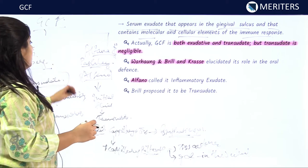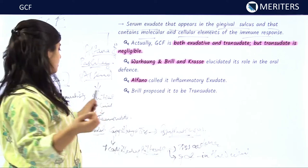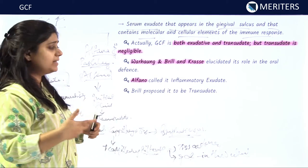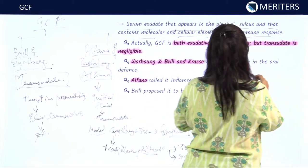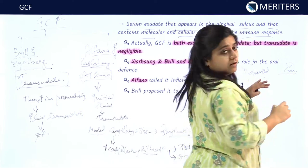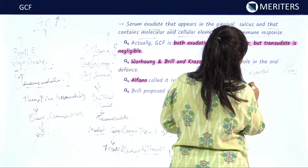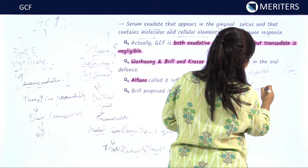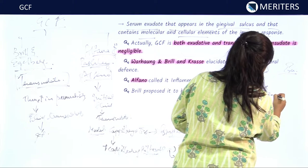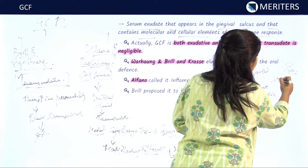Thus, the initial fluid produced into the GCF is a transudate and later on what is formed is the exudate. A transudate is a fluid that comes out of capillaries because of increased permeability, while an exudate is formed because of increase in inflammation.